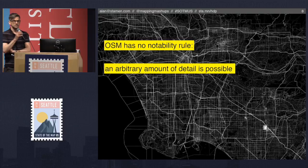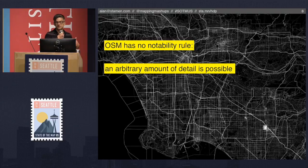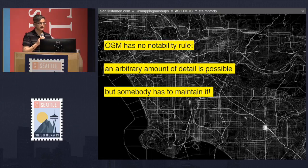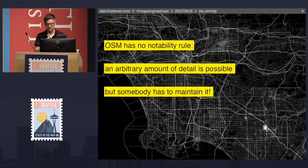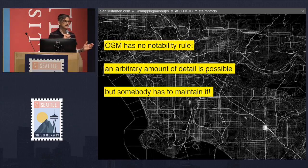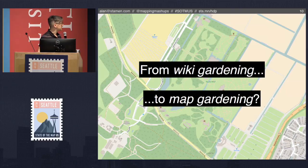We do not have a Notability Rule. Basically, an arbitrary amount of detail is possible and to some extent condoned. You can add any tree you want, as many trees as you want. But the problem is somebody's going to have to maintain it. What's that going to look like? That was one of the main arguments of the deletionists in Wikipedia — if you let people add an article about anything, you have so many articles that functionally you can't have people maintaining them to the degree you need them to be maintained.